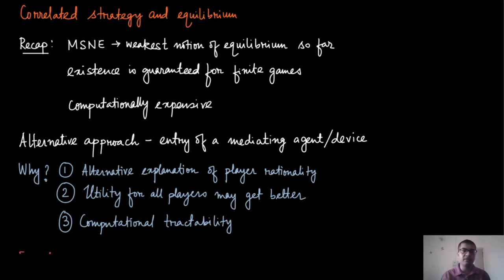Before we begin discussing what is a correlated strategy and equilibrium, let us quickly recap what we learned in the previous modules. We discussed the mixed strategy Nash equilibrium, which was the weakest notion of equilibrium discussed so far. The previous notions of equilibrium might not exist in a normal form game, and therefore we arrived at MSNE where existence is guaranteed by Nash's theorem, but computation of mixed strategy Nash equilibrium is very expensive.